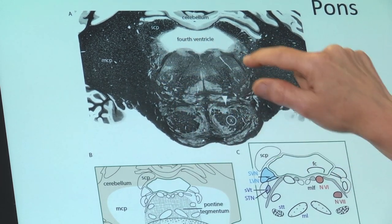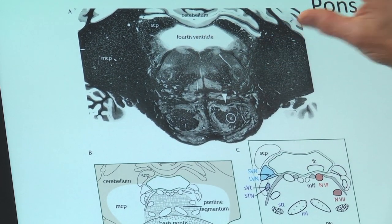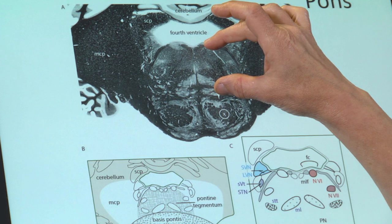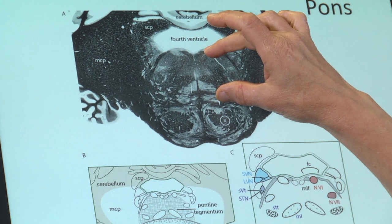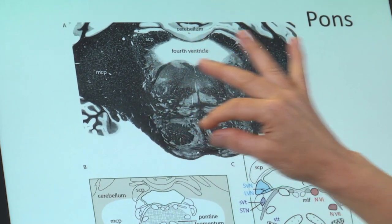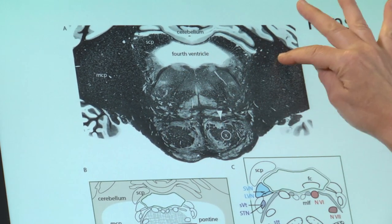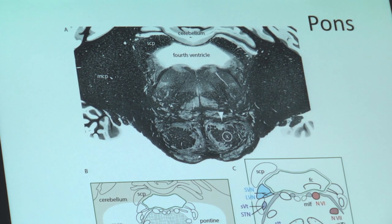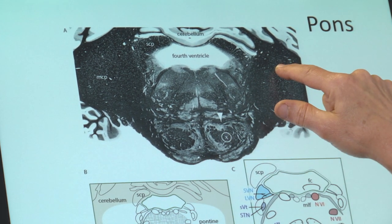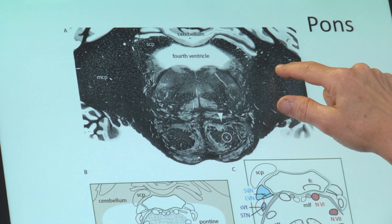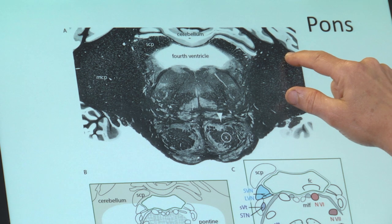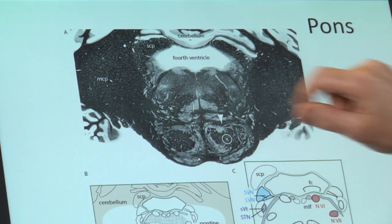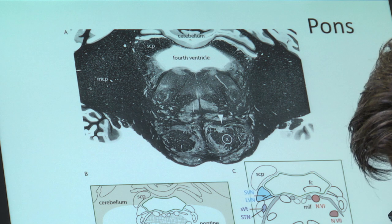There's a dorsal part called the tegmentum. This is where we're going to find cranial nerve nuclei. So down in the basis pontis we find the connection between the corticospinal and corticobulbar tract and the cerebellum, and up in the tegmentum we find our cranial nerve nuclei.